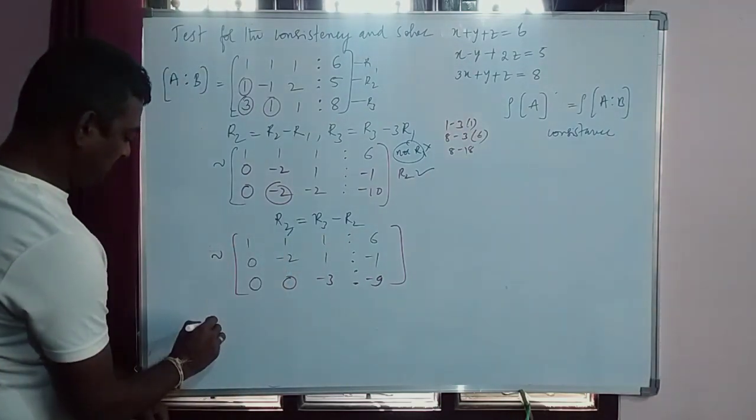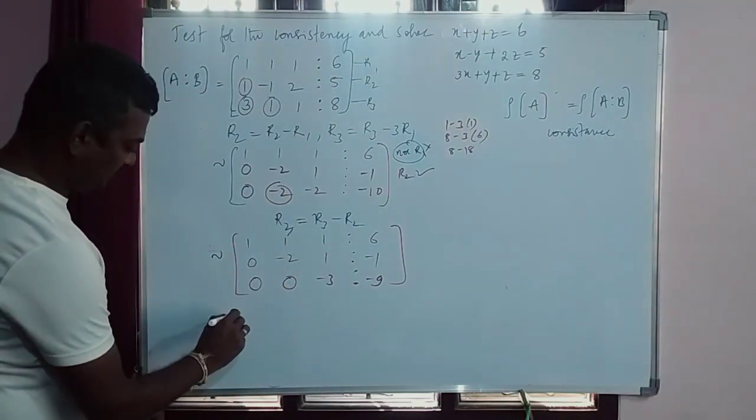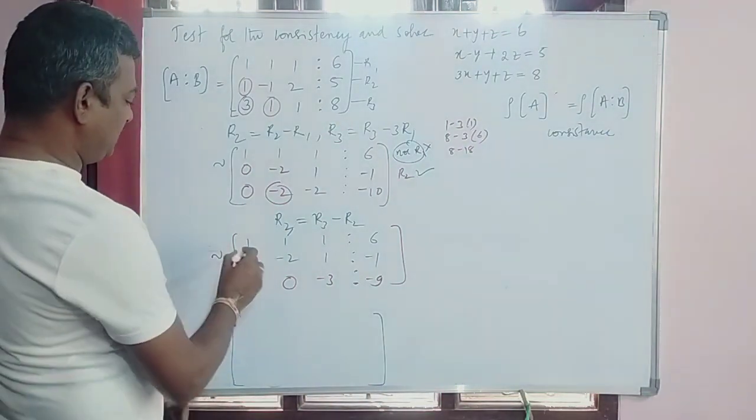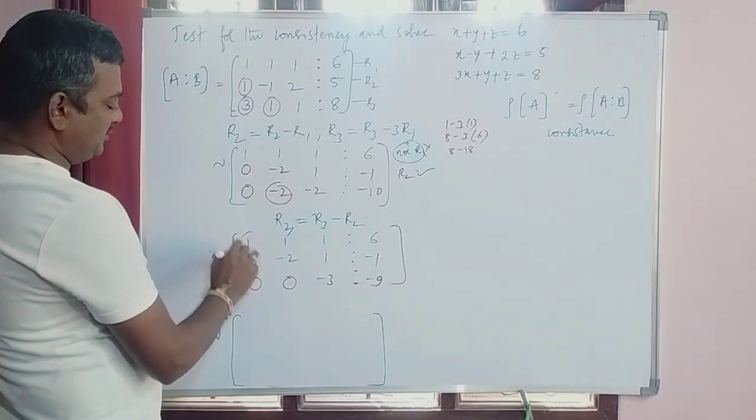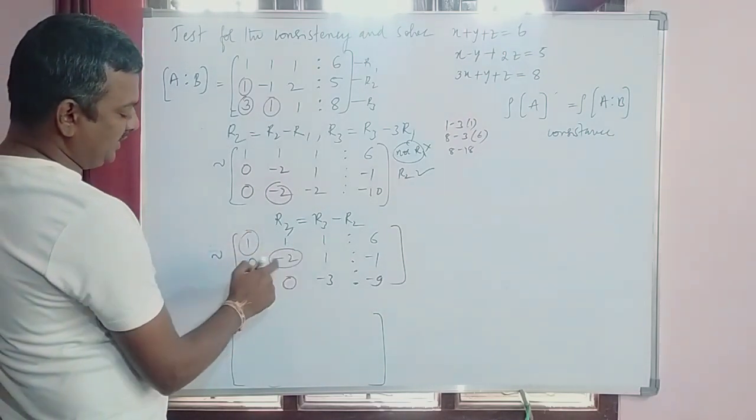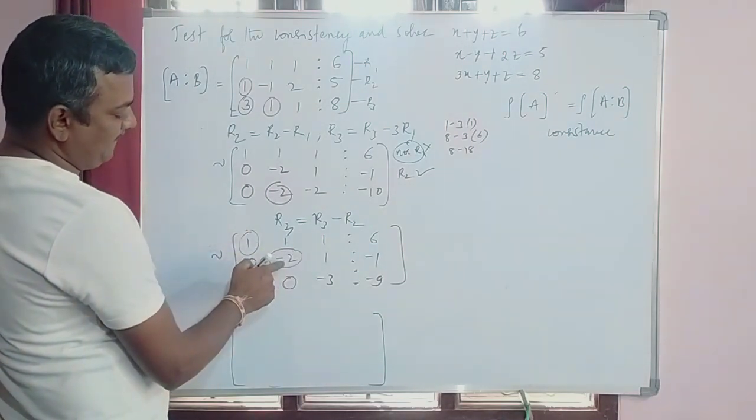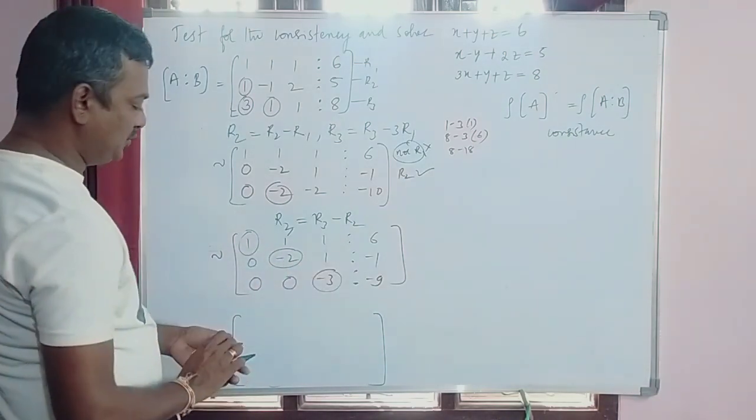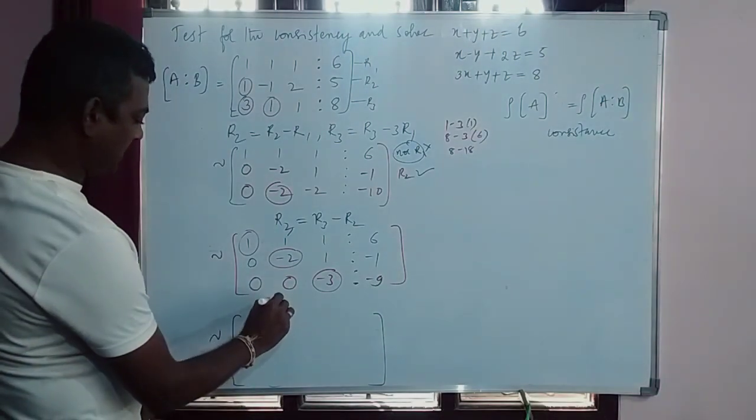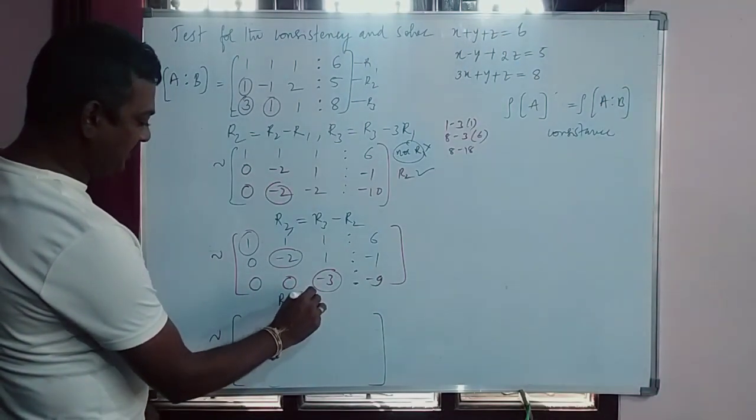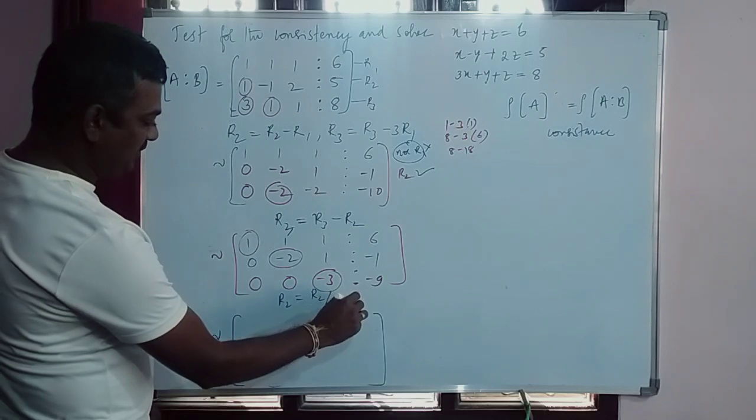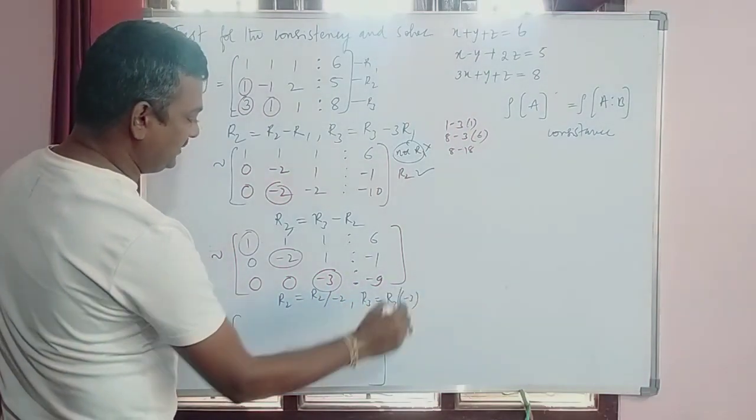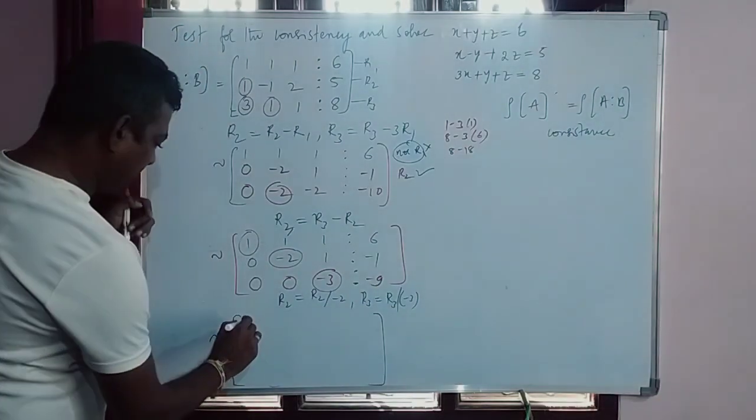Now look at student. Before proceeding further, observe. So first row leading entry, first element is 1. Here also we have to make this element is 1 and this element is also 1. To make it that, R2 is R2 by -2, and R3 is equal to R3 by -3.